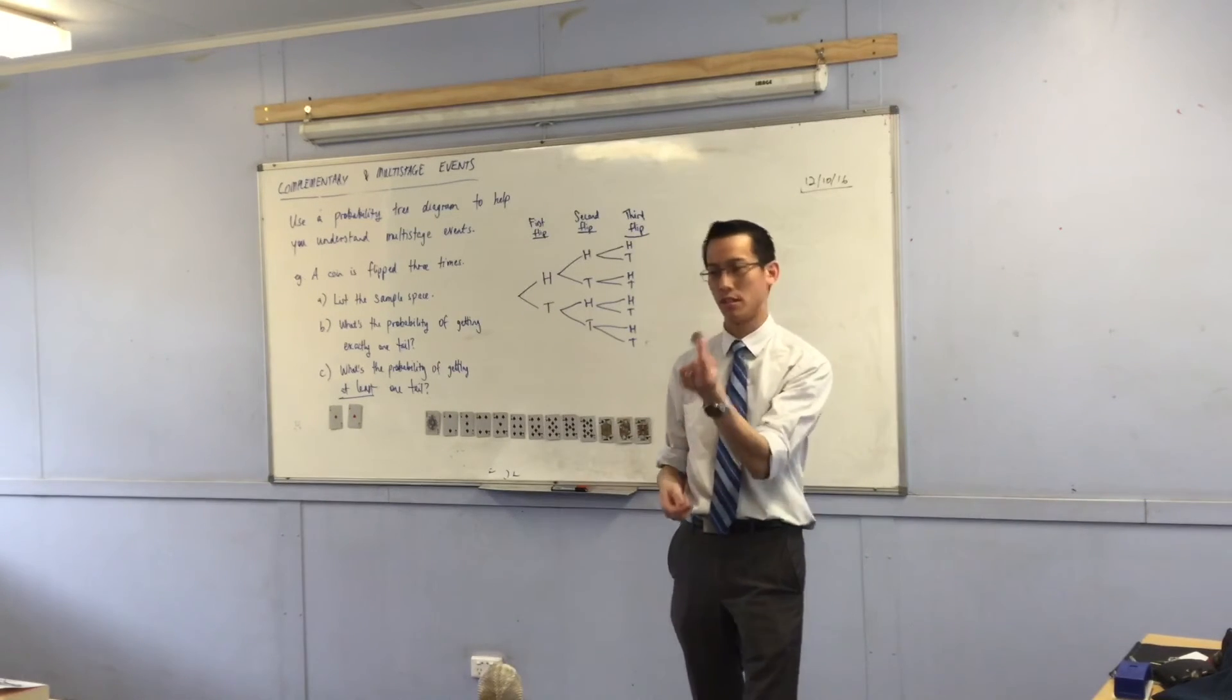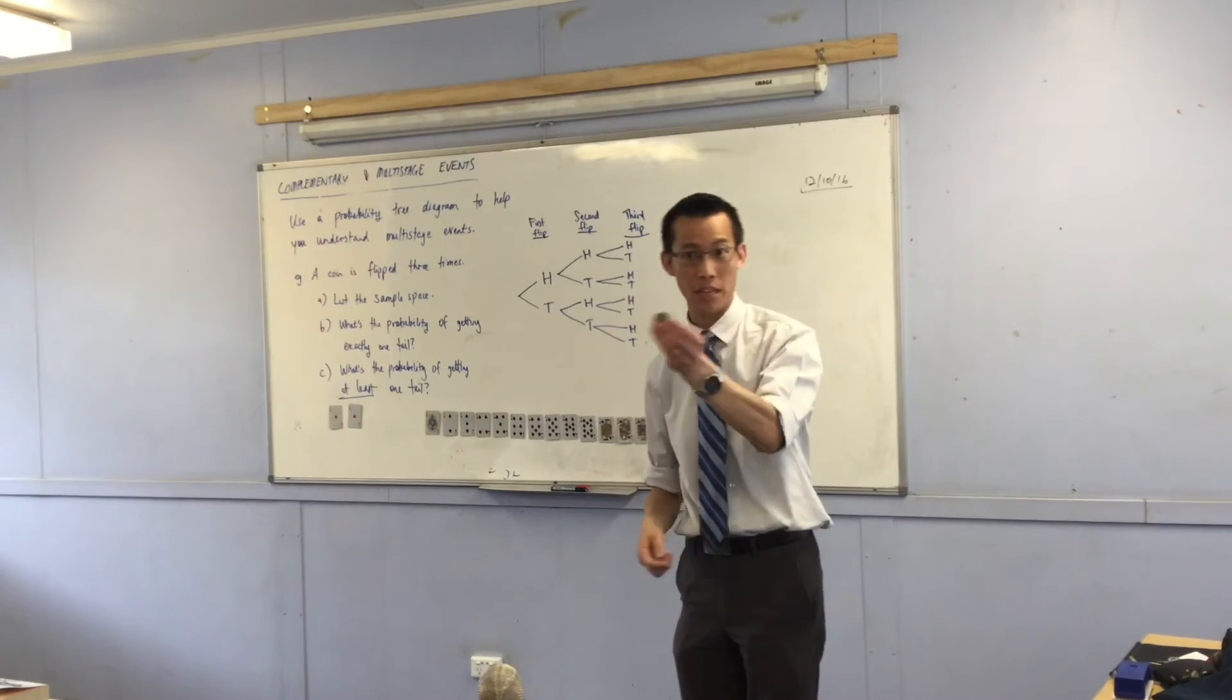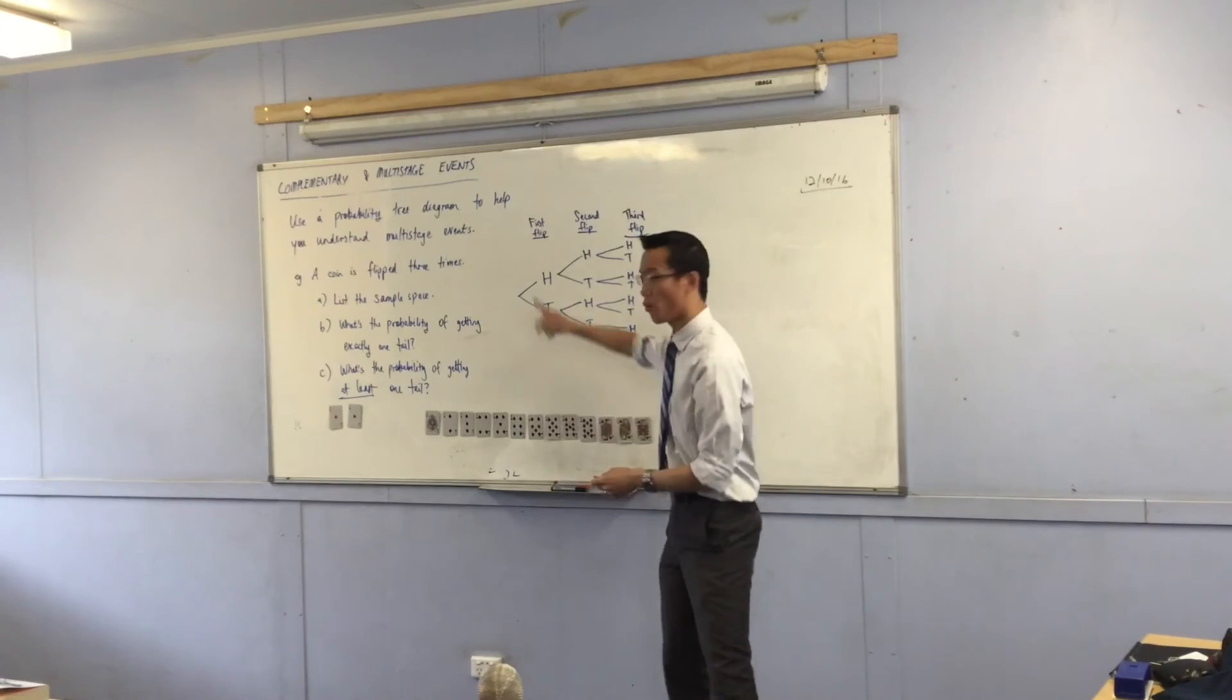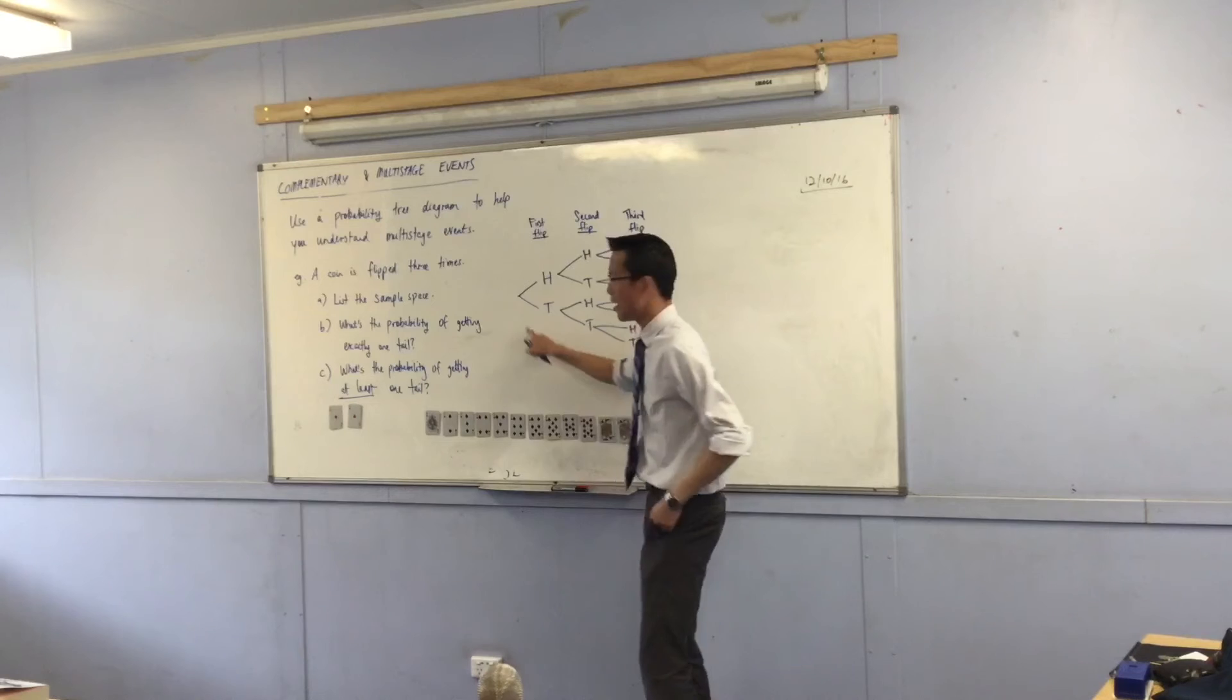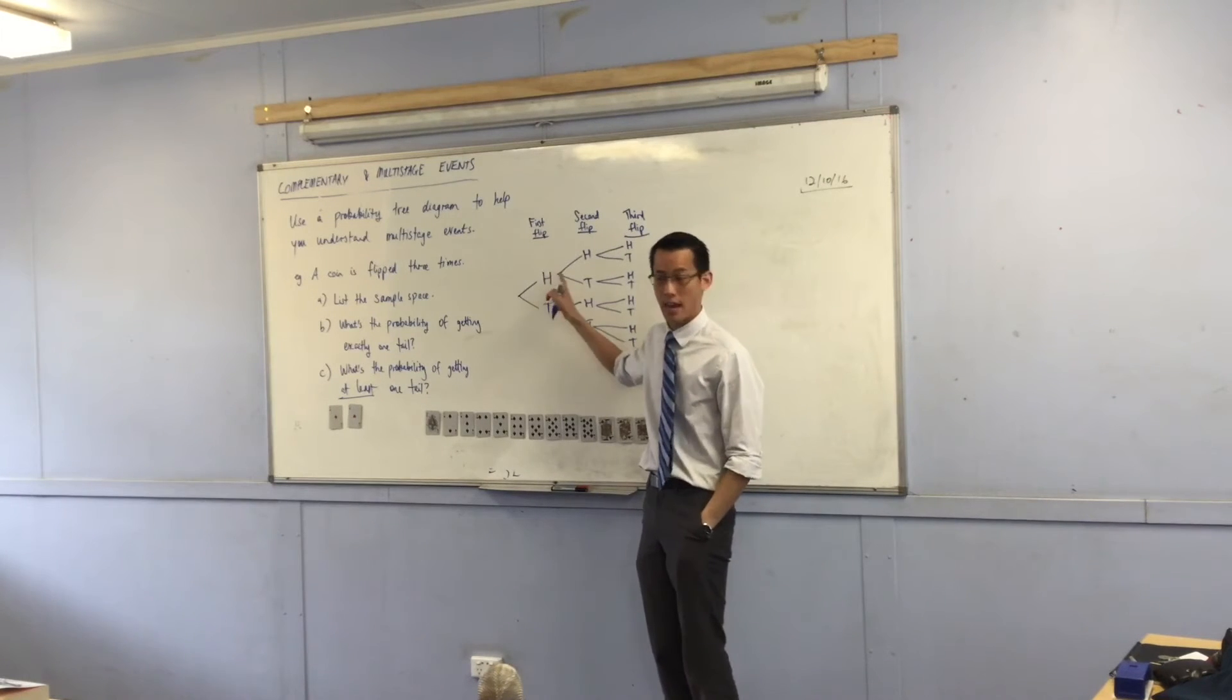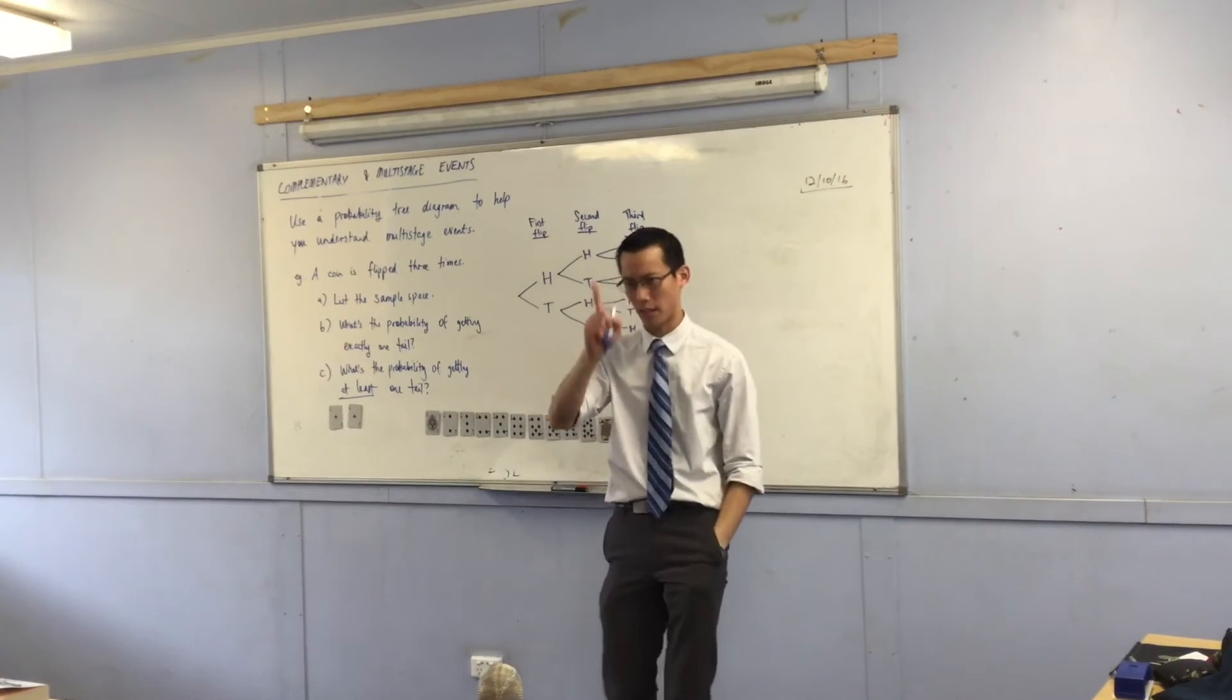But I could have a coin that's designed to flip on one side more than the other. It's slightly suspicious that I got three heads in a row. Suppose it was twice as likely to get a head versus a tail. Think about that for a second.